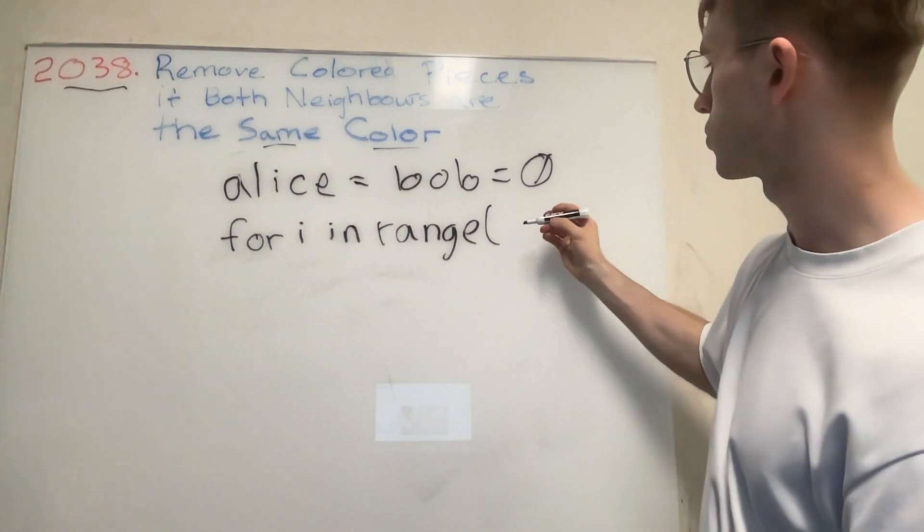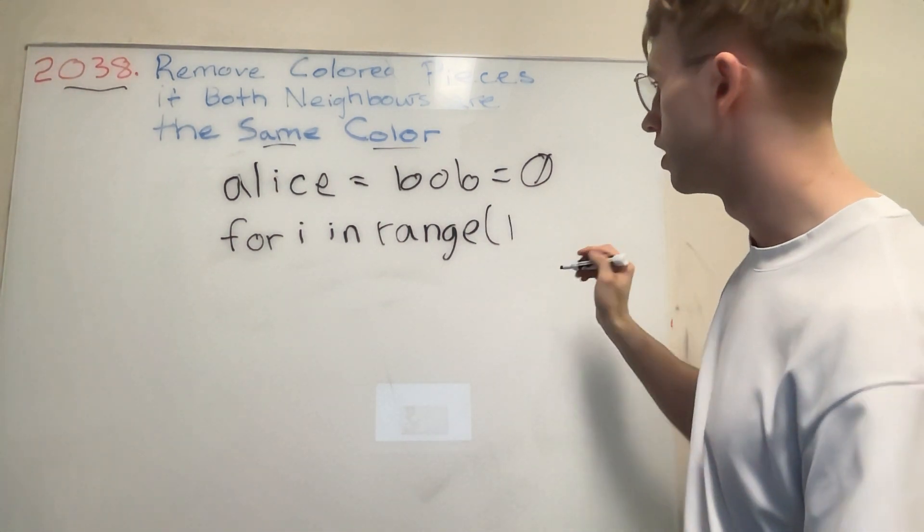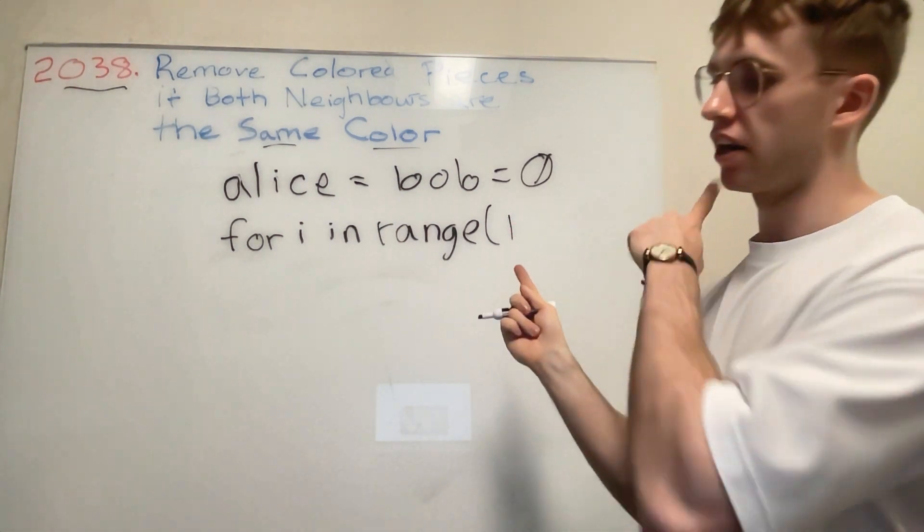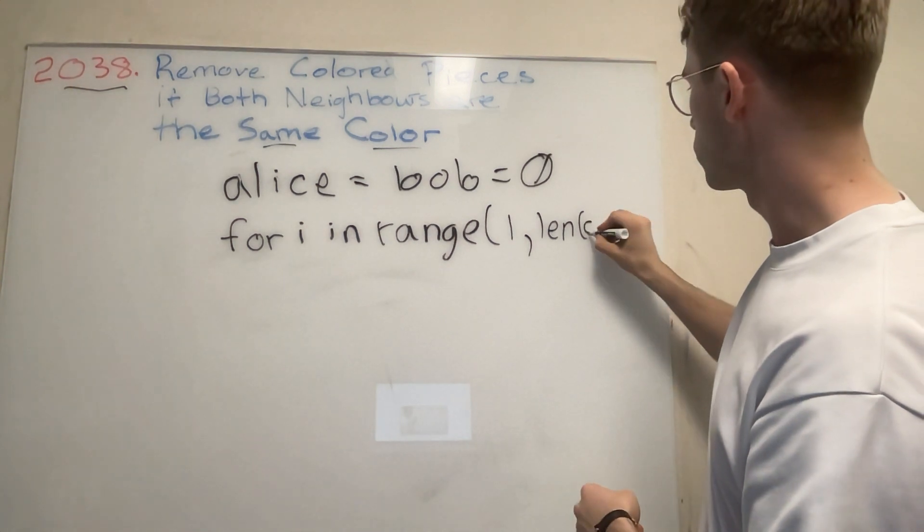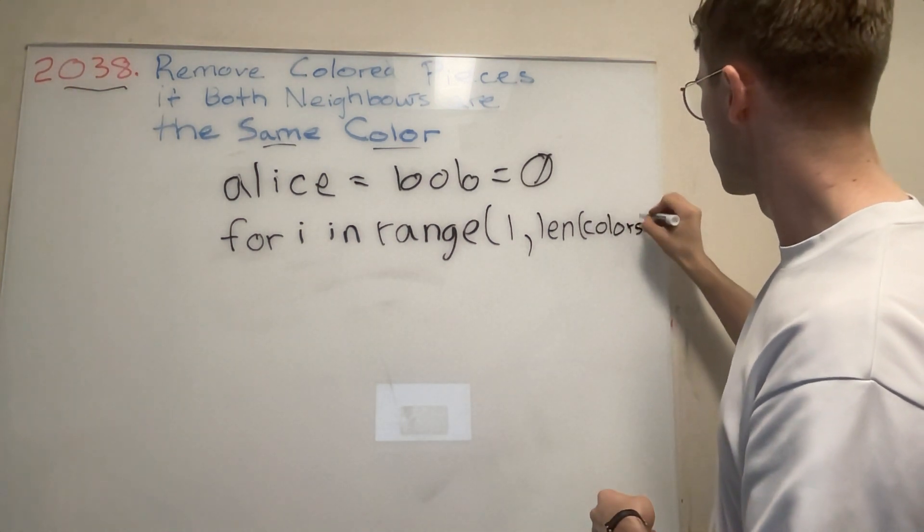We want to start actually at index one so we can have one index to the previous, and then basically to the length of our input array, which is colors minus one.